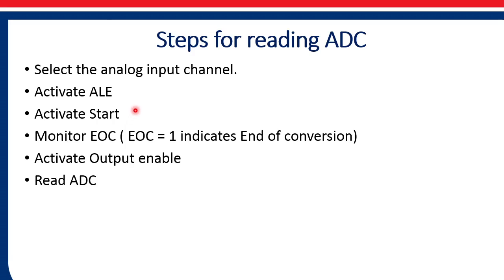Then we need to give a start pulse. On the falling edge of the start pulse, ADC 0809 will start converting the analog quantity into digital format. Once the conversion is complete — which takes 8 clock pulses — it will raise the EOC line. When EOC becomes equal to 1, it indicates end of conversion, and we will enable the output enable pin. Once OE is made equal to 1, the converted data will be available on the output pins of the ADC.